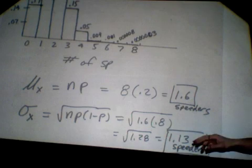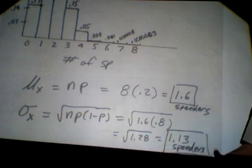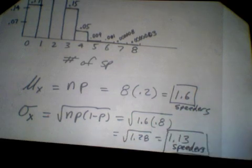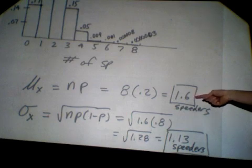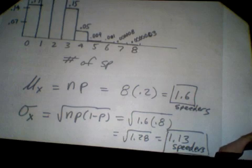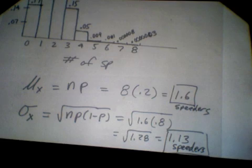So it would be 1.28 speeders squared, which doesn't seem to have much meaning. That's why we would square root the variance to get the standard deviation. Instead of calling it speeders squared, it would be called just the number of speeders, so about 1.13. So how do you use standard deviation to express what's happening here? Well a nice way to express it is start with your mean and then subtract the standard deviation and add the standard deviation. So you'd say that a typical police officer might expect somewhere between 0.6 to 2.6 speeders or 2.7 speeders.